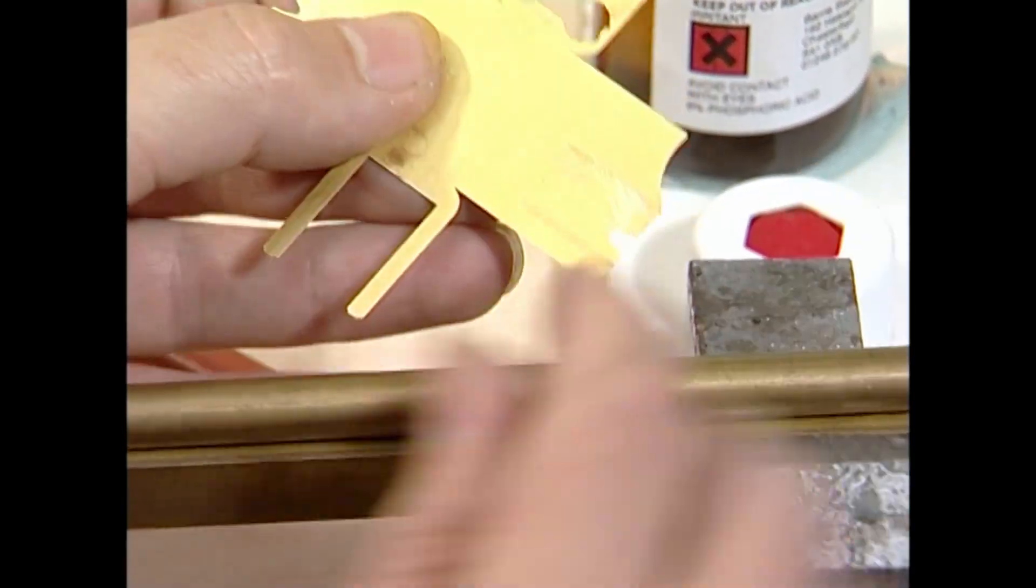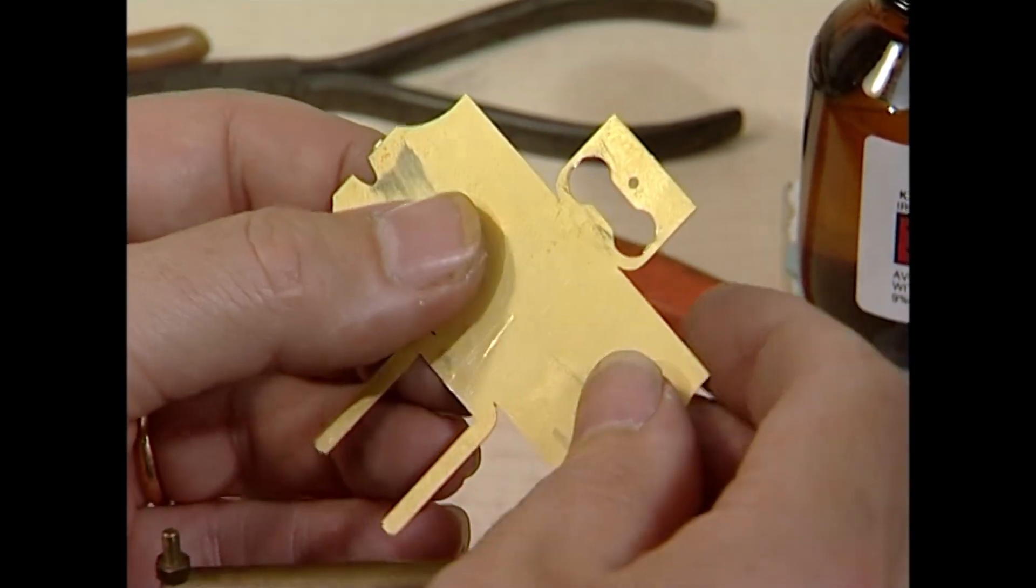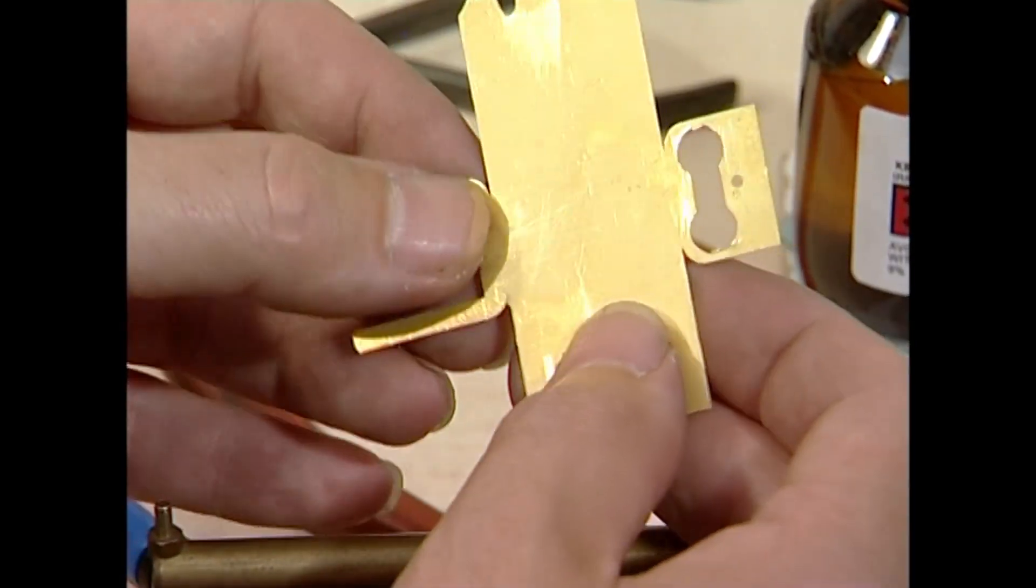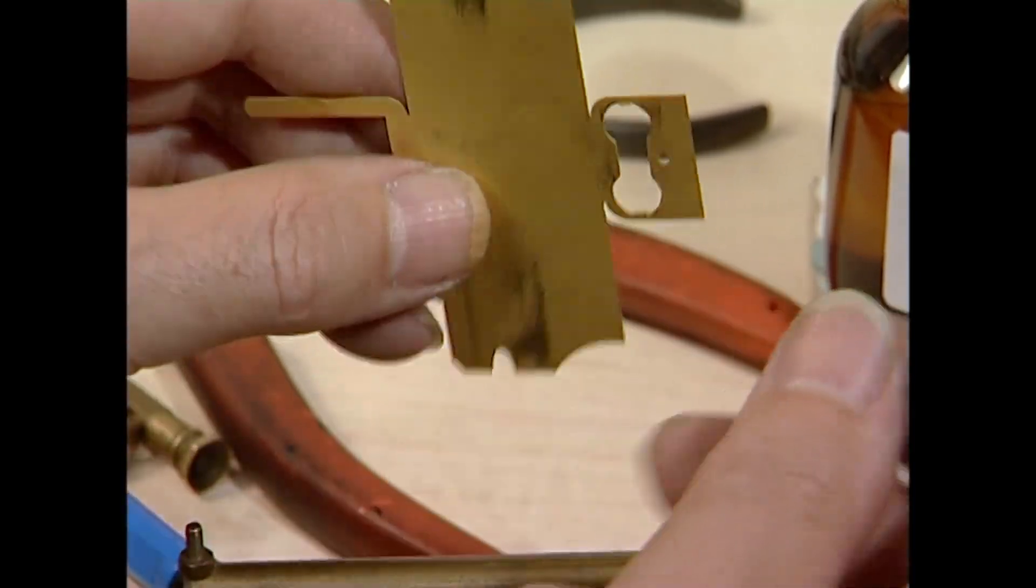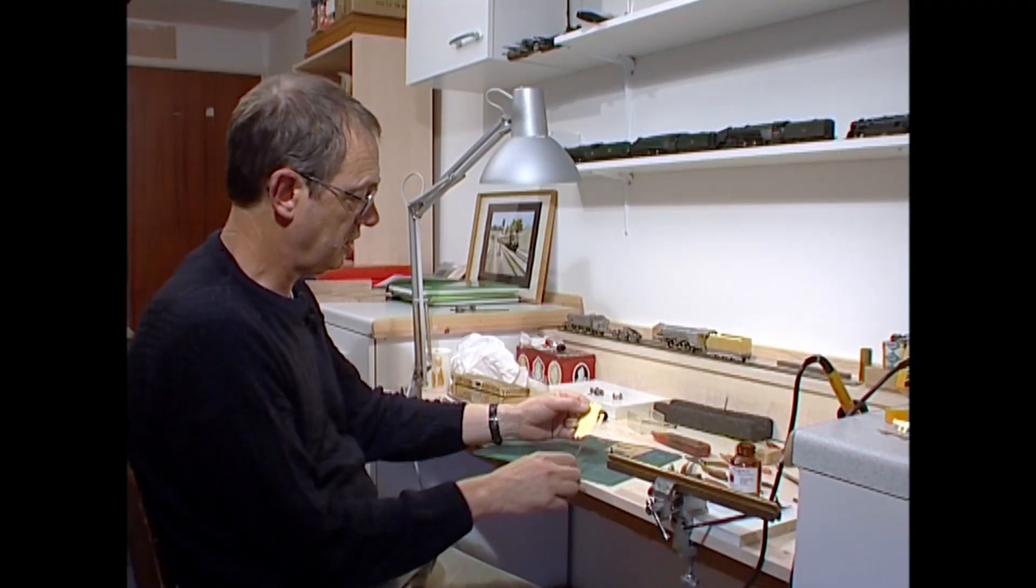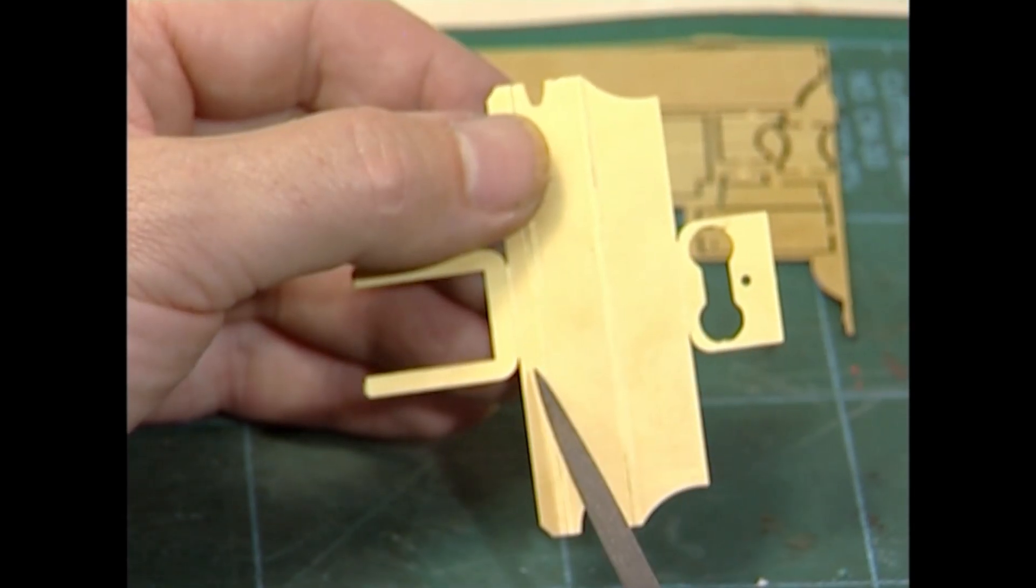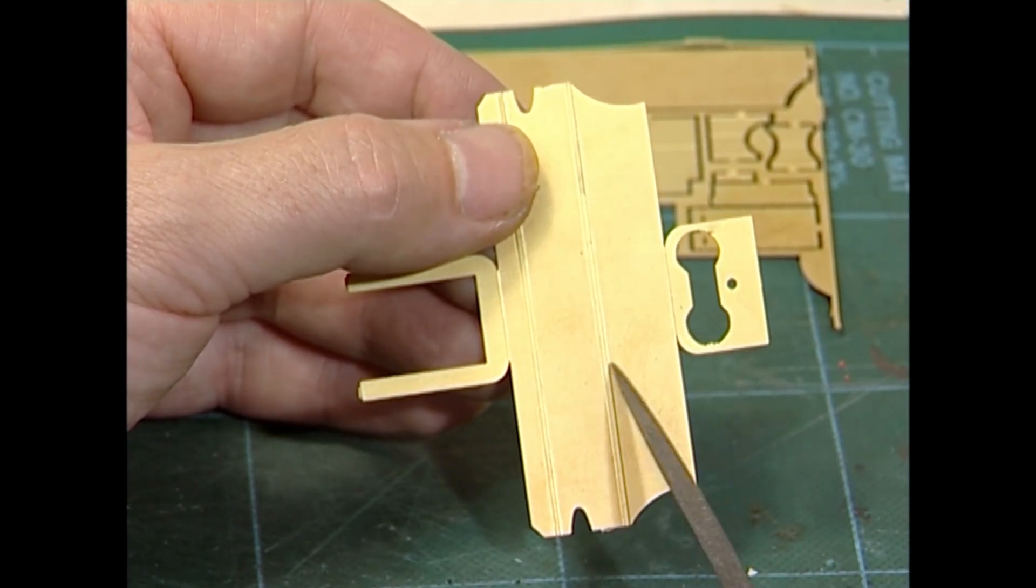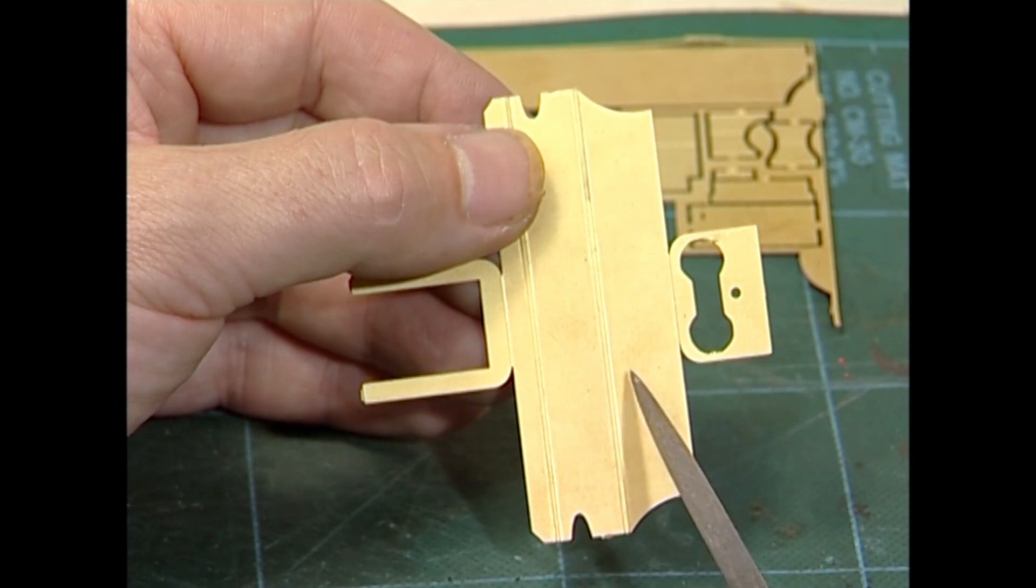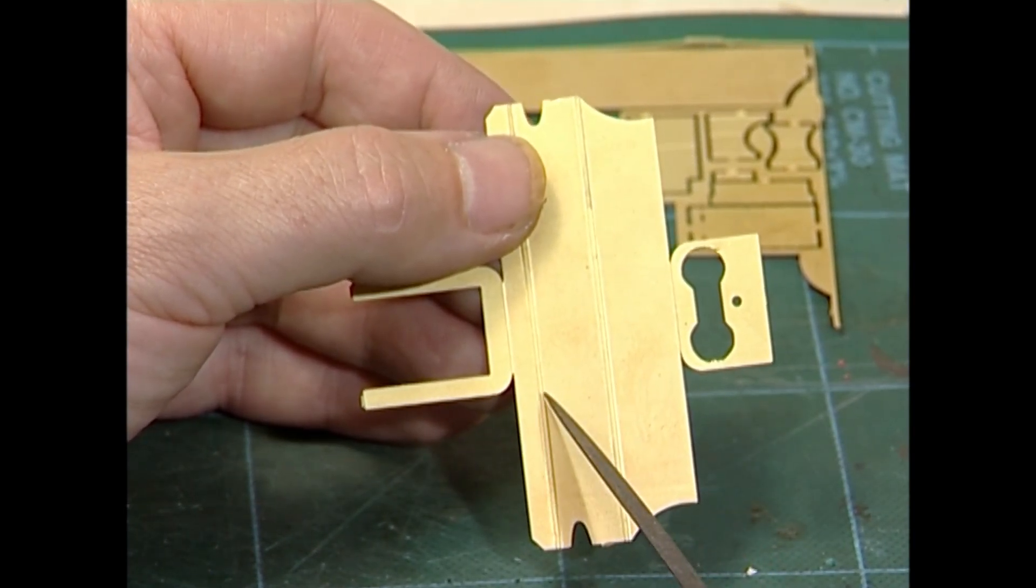Now comes the fun forming it. In the way that you can have three-dimensional chess, this is a three-dimensional jigsaw. That represents the front of the firebox. That represents the rear. A little bit more cleaning up to do there.